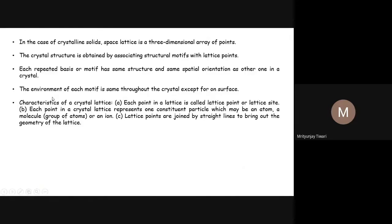The environment of each motif is the same throughout the crystal, except on the surfaces. When we cut a solid, a surface is created where some unsaturation exists. This is why surfaces are used as catalysts — the arrangement of particles around a surface atom is not the same as in the bulk, creating reactive sites. The characteristics of a crystal lattice include: each point is a lattice point or lattice site; each lattice point represents one constituent particle (atom, molecule, or ion); and lattice points are joined by straight lines to bring out the geometry of the lattice.